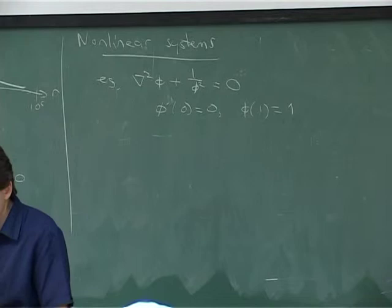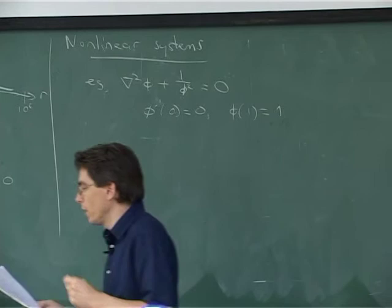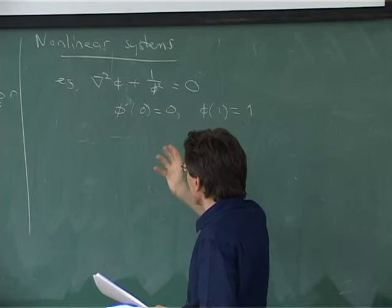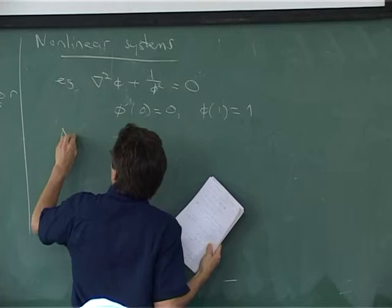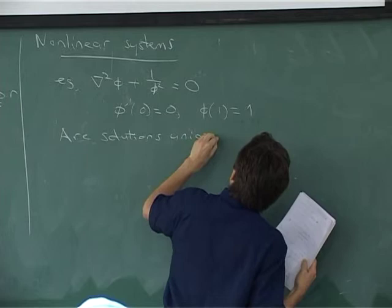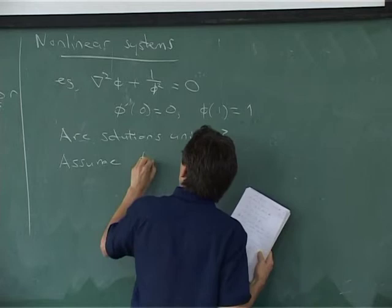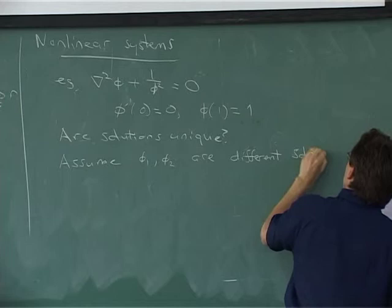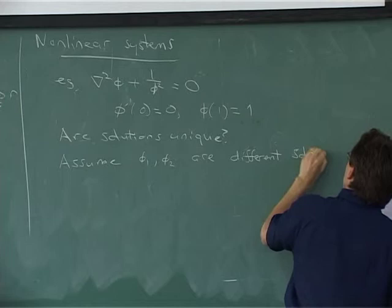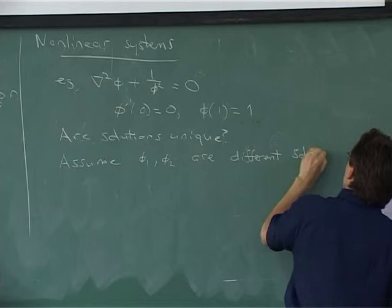Uniqueness and existence of solutions is a major mathematical topic. For existence, you might think finding a numerical solution settles it, but numerical solutions at low resolution can be misleading. For uniqueness, the technique is proof by contradiction: assume phi one and phi two are two solutions satisfying the same boundary conditions, and ask whether they must be equal throughout the domain.